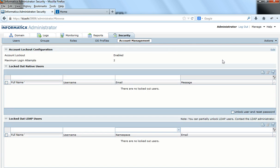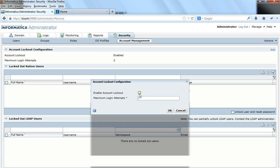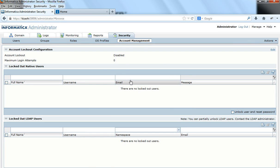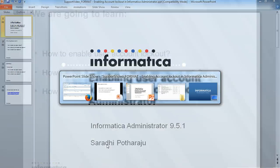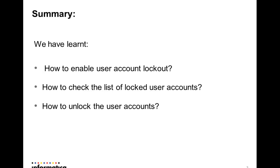To disable account lockout, I go to Account Management and uncheck the option — account lockout is now disabled. So in this presentation we've seen how to enable user account lockout, how to check the list of locked out user accounts, how to unlock user accounts, and how to disable user account lockout. The important point to remember is that the default administrator user will not get locked out even if the password is incorrectly entered for the maximum login attempts.